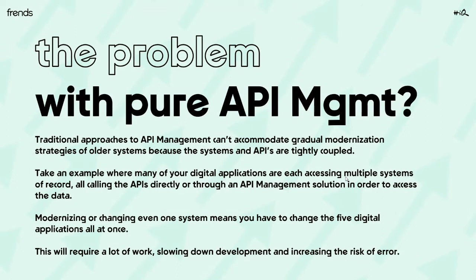The problem with a traditional pure API management approach is that it's super hard to accommodate the gradual change of all the systems of record and APIs being managed. The key to enabling gradual modernization is that oftentimes all the APIs and systems gathered under API management tools are quite tightly coupled together. For example, if we have digital applications like a web shop, customer portal, or mobile app,